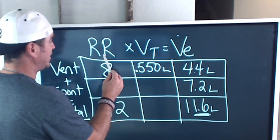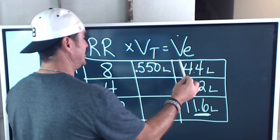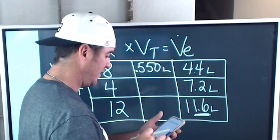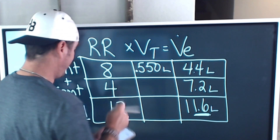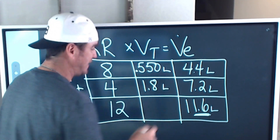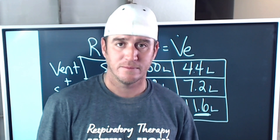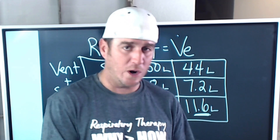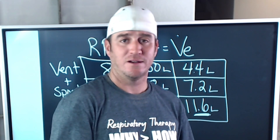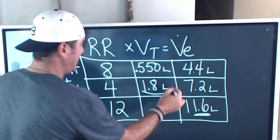To find the patient's average spontaneous tidal volume, we use minute ventilation divided by respiratory rate. So 7.2 liters divided by 4 spontaneous breaths equals 1.8 liters — that's 1800 milliliters per spontaneous breath that this patient is taking.